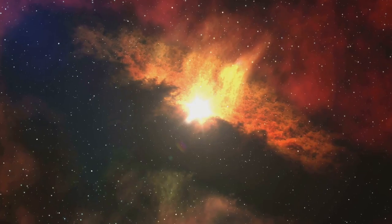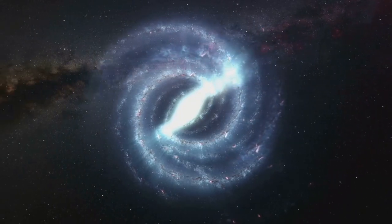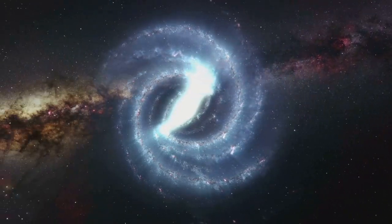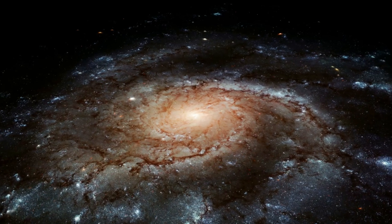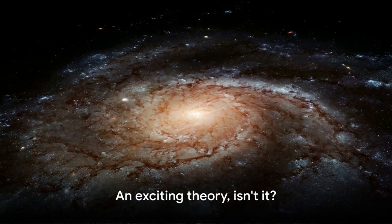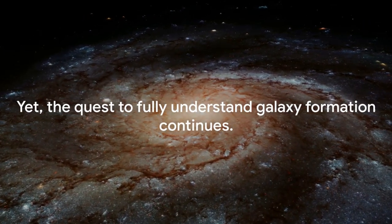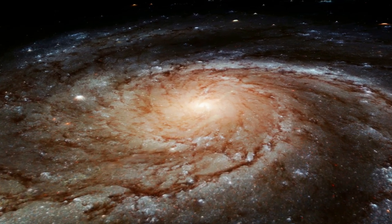This theory accounts for the diverse shapes and sizes of galaxies we observe today. Spiral galaxies could be the result of smaller galaxies merging, while elliptical galaxies could be the outcome of larger, more massive galaxy unions. An exciting theory, isn't it? Yet, the quest to fully understand galaxy formation continues. Our cosmic journey is far from over, as we continue to unravel the mysteries of the universe.